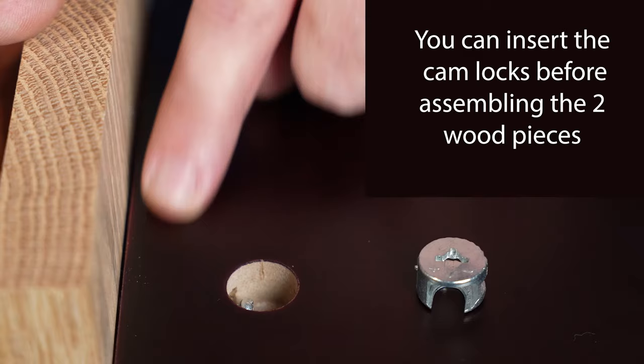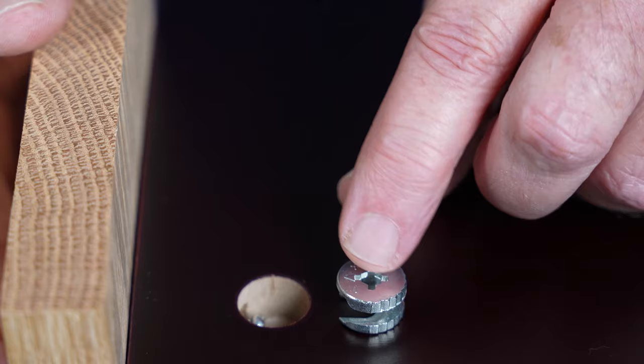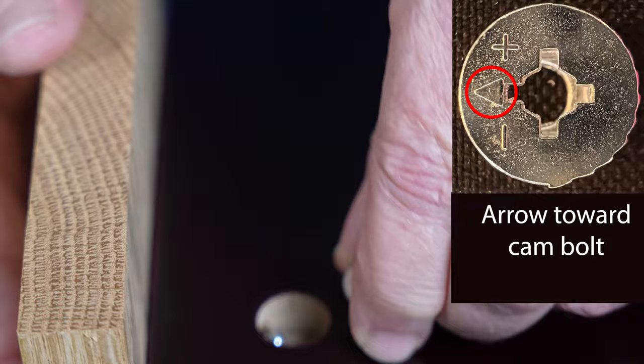Now, the cam lock is going to have the arrow facing the cam bolt in the hole, and that's because this U shape is going to let it slide over this cam bolt.